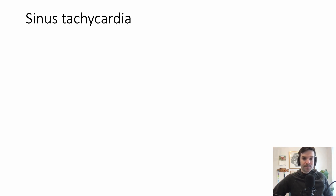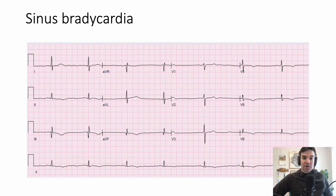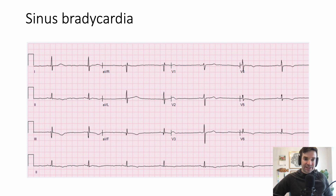Let's show an example of each. First up, sinus tachycardia. We can see there are a lot of QRS segments here — count them all up and multiply by six, and you'll realize it's well over 100 beats per minute. We can also see a P wave before each QRS, so this represents sinus tachycardia. You can contrast that with sinus bradycardia — right away you can see there are way fewer QRS intervals. Counting seven QRS complexes times six gives a heart rate of 42. The P waves are a little hard to find, but with the eye of faith, you can find them before each QRS.